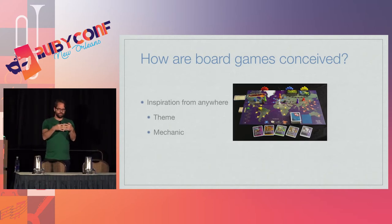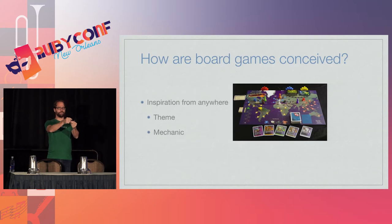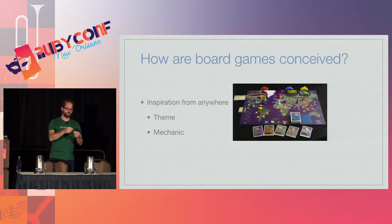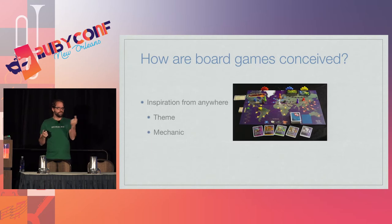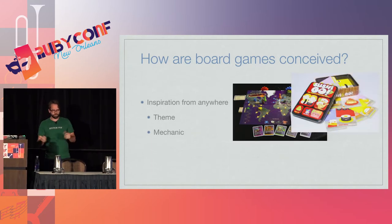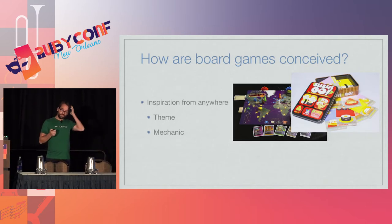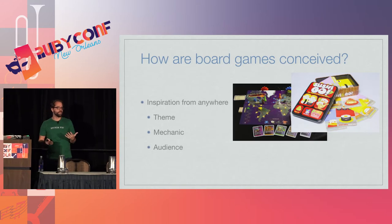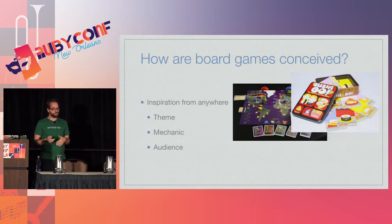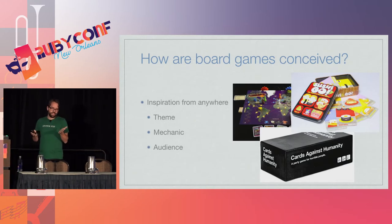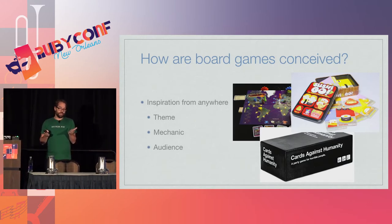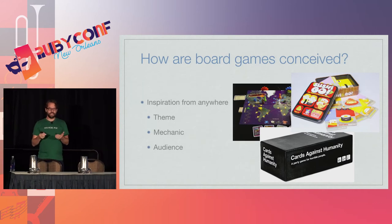You can also find inspiration from a mechanic. Somebody wanted to make a drafting game — drafting is just when you pick something out of a set of things and pass what's left to the next person. And somebody noticed that's kind of like the conveyor belt at a sushi restaurant, and so they made Sushi Go. You can also just be inspired by your audience — I really want to make a game my kids will play, or my co-workers can play at lunch, or a game for horrible people. It's based around the audience.